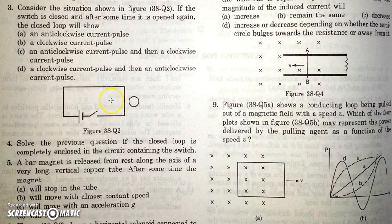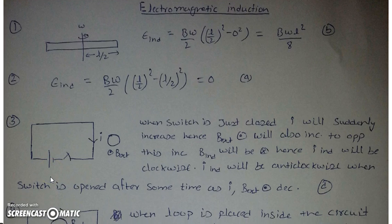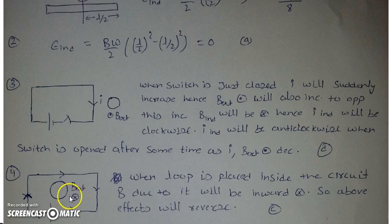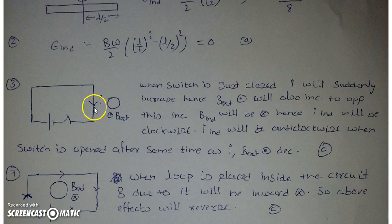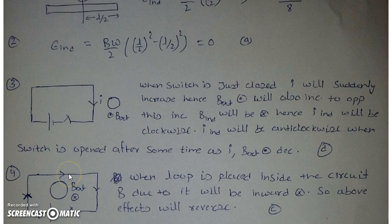In the next part, if the small coil is placed completely inside the loop, the magnetic field due to the current at that point is into the plane of paper instead of out of the plane. So every effect is reversed. When the switch is just closed and the current increases, the external field into the plane of paper increases, so the induced field will be out of the plane of paper and the current will be anti-clockwise, and vice versa.